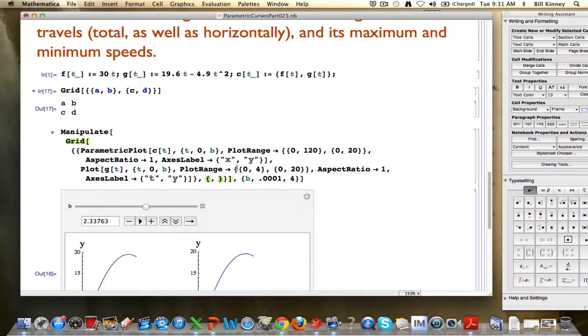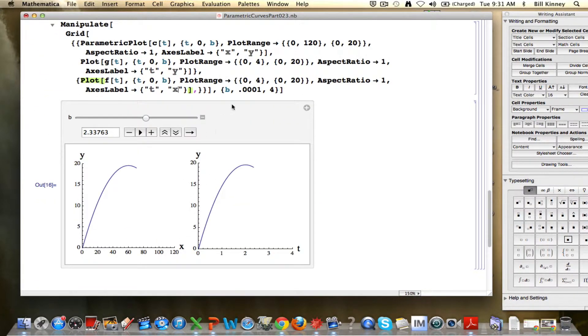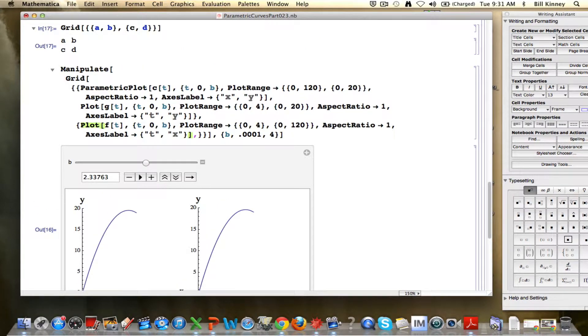In the lower left, I want to have the plot of f. So I will copy and paste to help save some time here. Copy and paste the plot of g here. Change the g to an f. Change the y to an x. And then also the plot range, x goes from 0 to 120. That should do it.